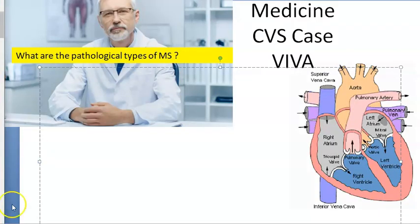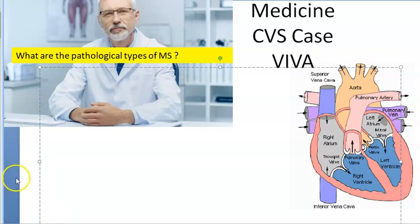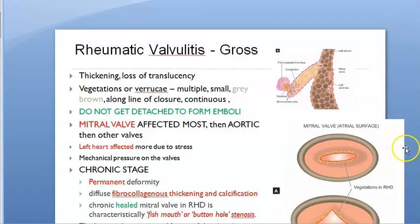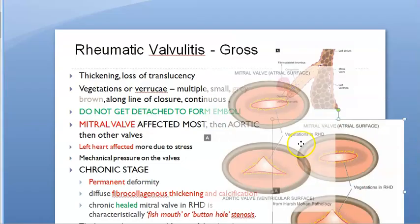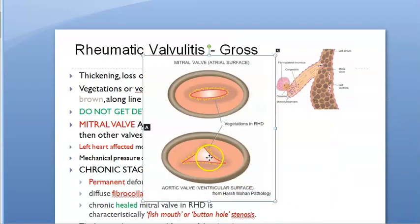What are the pathological types of mitral stenosis? The pathological types of mitral stenosis include the buttonhole and fish mouth appearance, and funnel type of mitral stenosis.